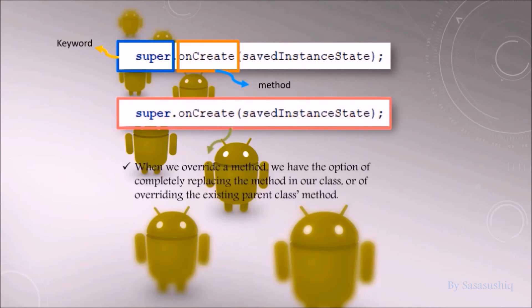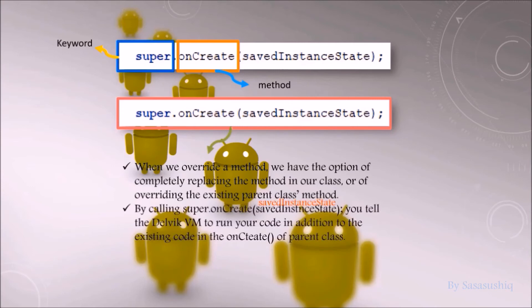When we override a method, we have the option of completely replacing the method in our class or extending the existing parent class method. By calling super.onCreate(savedInstanceState), you tell the Dalvik VM to run your code in addition to the existing code in the onCreate parent class. If you leave out this line, then only your code is run.